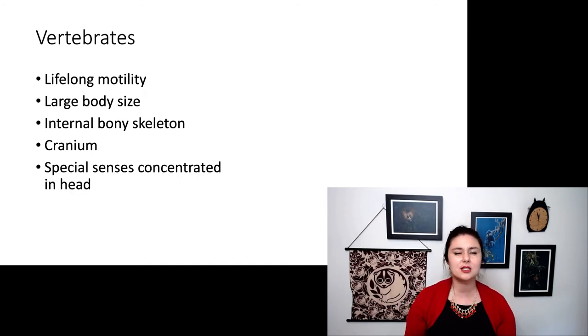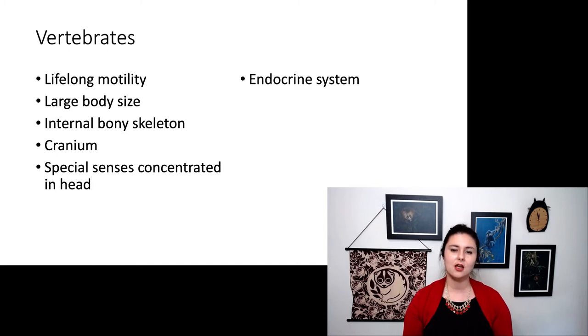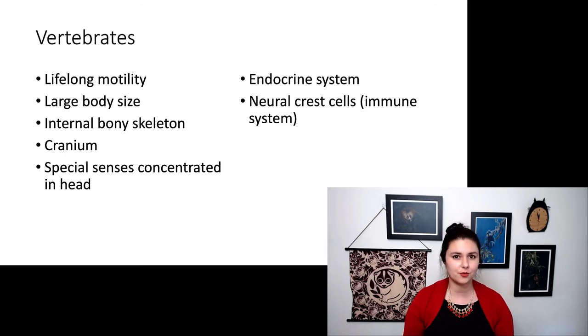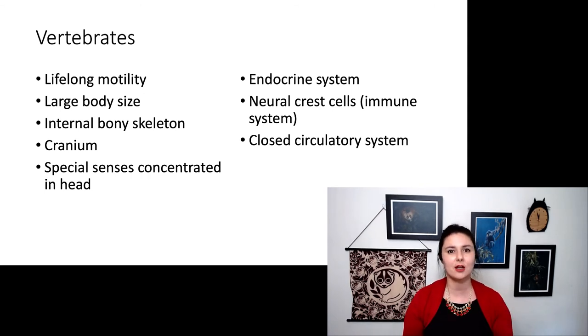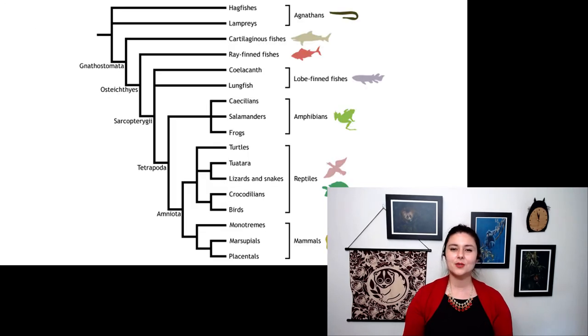We also start to see the special senses are concentrated in the head. We have an endocrine system. We have hormones to regulate different body systems together, and we have neural crest cells which form an immune system. We also have a closed circulatory system, so rather than blood being diffused throughout our entire body, we have a specific system and everything is contained in more easily controllable channels, and we see the formation of red blood cells. So we can look within our vertebrates at the different groups here and how they're related. You can see our hagfishes and lampreys are the most basal and are the most ancestral compared to any other living group we see today.